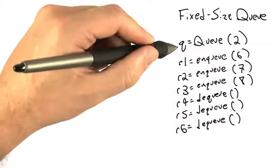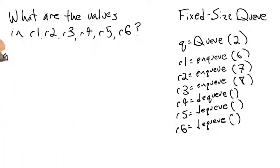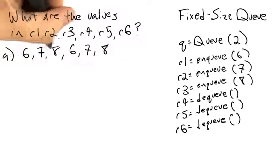Now the question that I'm asking is, what are the values of these six variables? So choice A is going to be 6, 7, 8, 6, 7, 8.